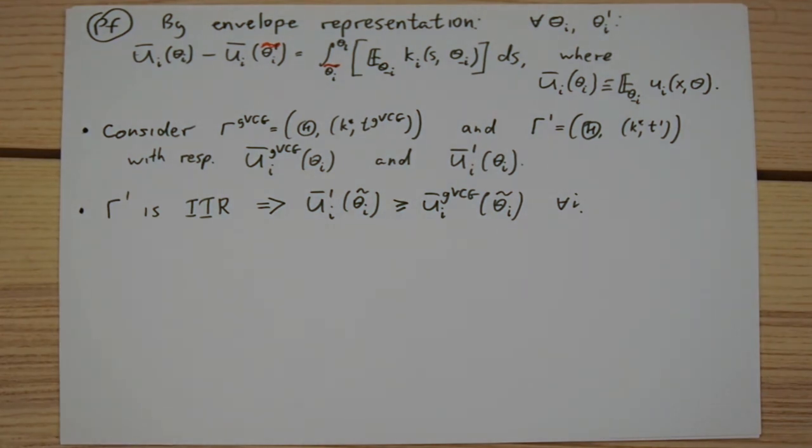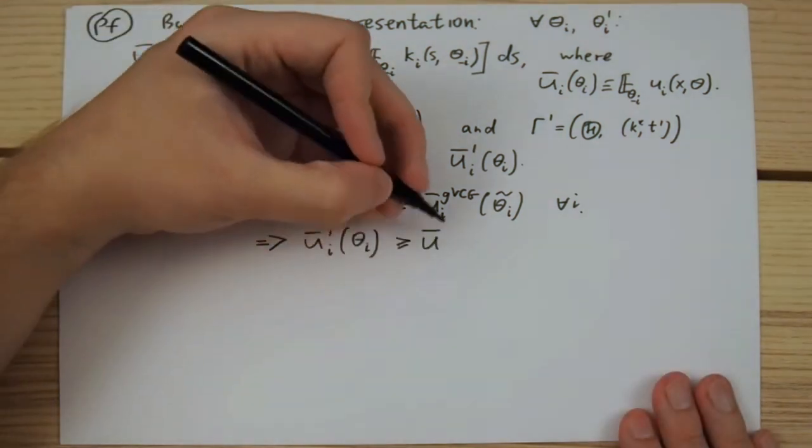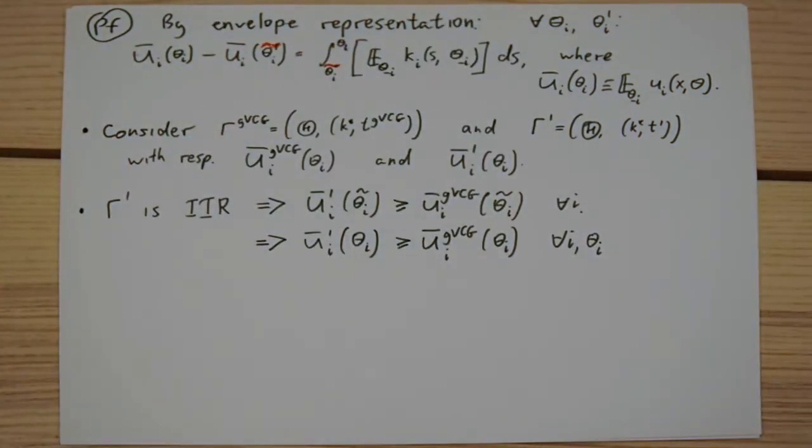But then from the envelope representation, it follows that the same must hold for any other type of player i. Now we can begin remembering how the expected utilities are connected to the expected revenue. The connecting link is the expected transfer that player i pays to the mechanism.